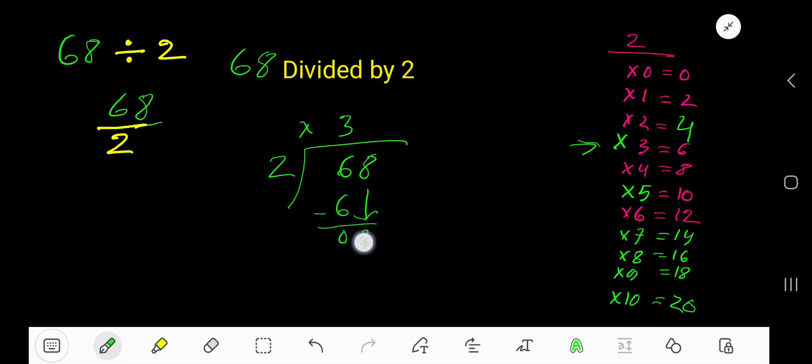2 goes into 8 how many times? Look, 4 times. 4 times 2 is 8. If you subtract, you are getting 0. So your remainder is 0 and quotient is 34, and divisor is 2.